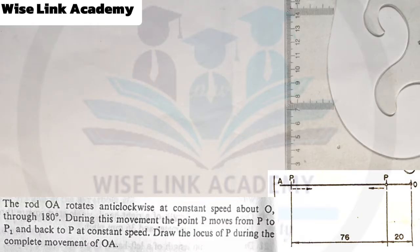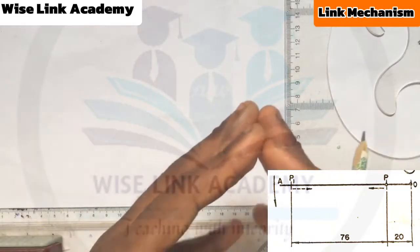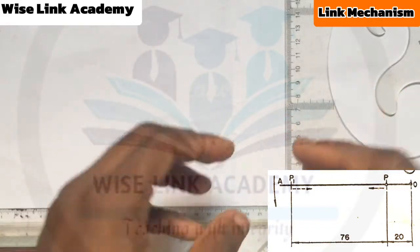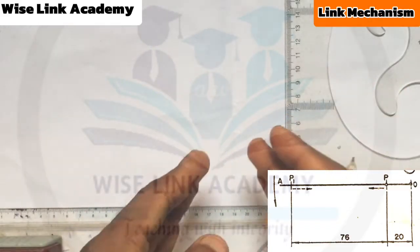Draw the locus of P during the complete movement of OA. So what are my first tasks here? First, for every problem under link mechanism, our first task is to draw out the figure given.